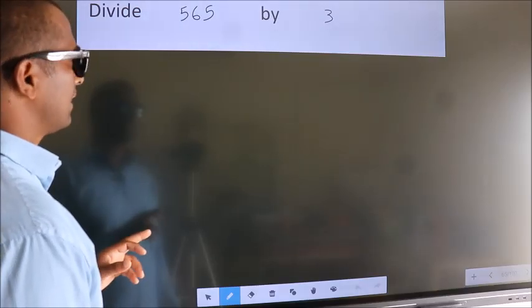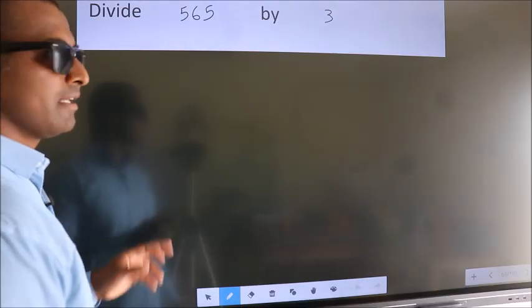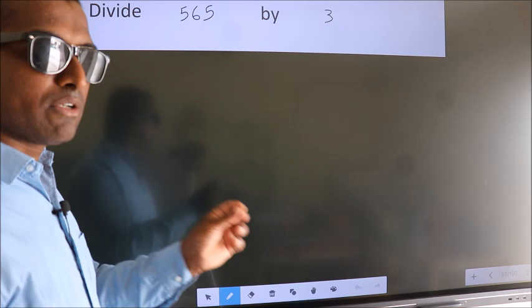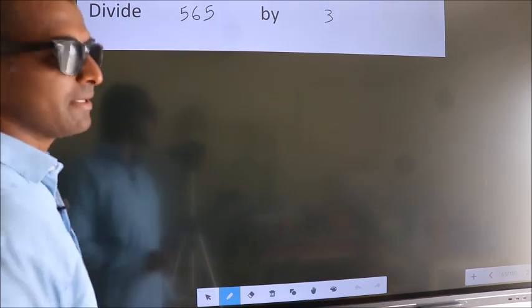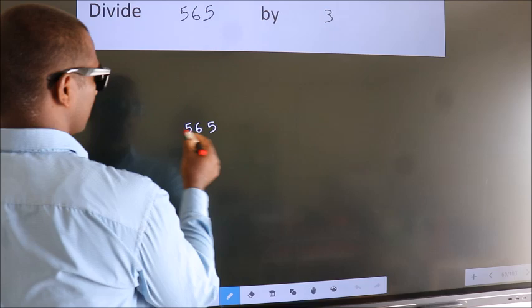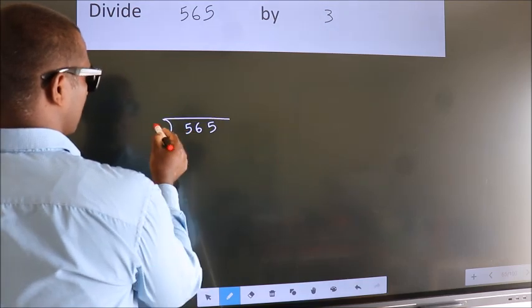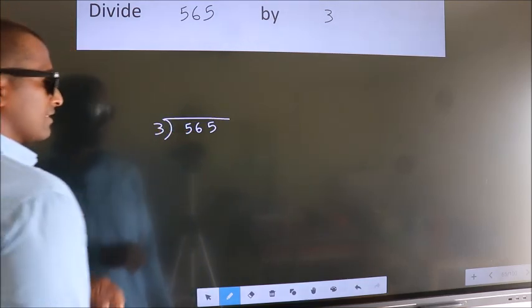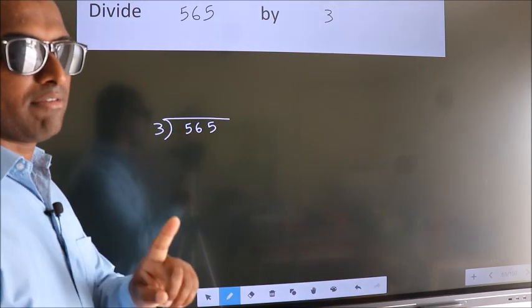Divide 565 by 3. To do this division, we should frame it in this way: 565 here, 3 here. This is step 1.